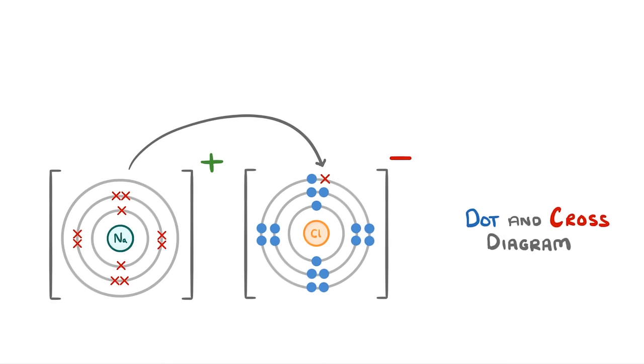Notice that in this dot and cross diagram we've shown every electron shell of the atoms. Sometimes though you'll be told you only have to draw the outermost shell which is a bit quicker to draw and for our example it would look like this.